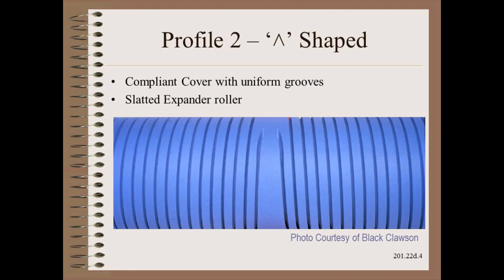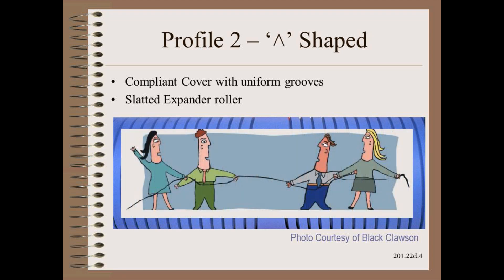The compliant cover spreader with uniform grooves and the slatted expander roller must have tent shape spreading profile. The reason is easy with the following analogy. In a tug of war, the highest tension is at the center and the tension tapers to zero at the ends.